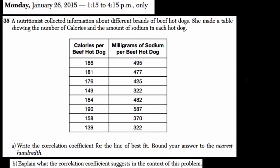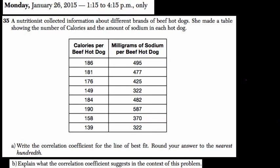Okay, so in this problem they're asking for the correlation coefficient, so we'll get towards that in a moment. Let's just read the context of the problem. They tell us that a nutritionist collected information about different brands of beef hot dogs. We have the beef hot dogs here, and then we have the calories per beef hot dog and the milligrams of sodium in the beef hot dogs.